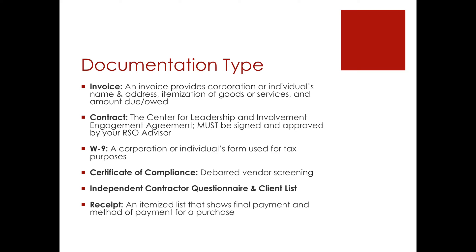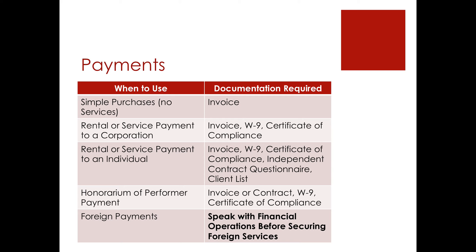Now that we've discussed documentation, let's talk about the various payment types available to your organization. First is a payment — a check that goes out for goods or services. For simple purchases with no service included, if you are sending out a check to pay for goods, all you need is the invoice from the corporation.